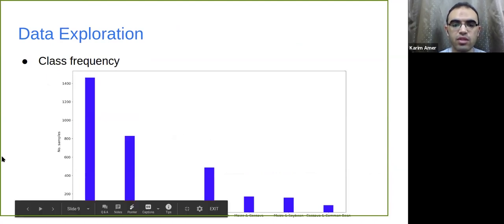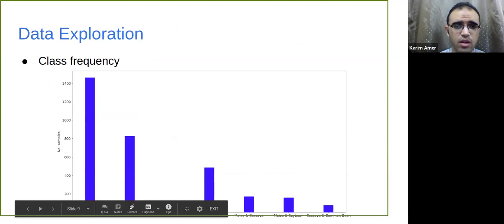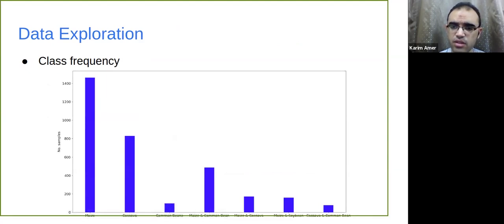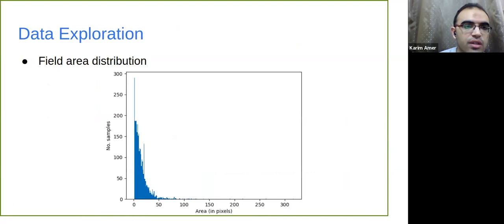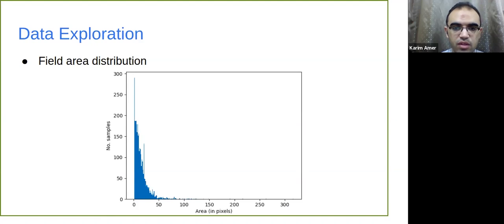Looking at the class frequency of the data, you can see that maize is the dominant class and the distribution is totally unbalanced — especially the intercropping classes, which have really low frequency, making things harder. The histogram of annotated field areas shows that most fields have only a couple of pixels — around four or five — which is really insufficient information.